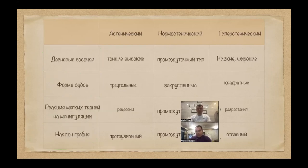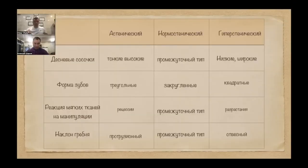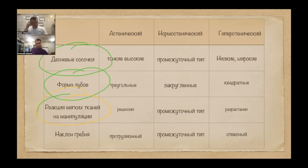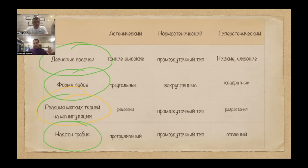The next component — gingival papillae. In asthenics these are thin and tall papillae; in hypersthenics they are low and wide. Tooth shape follows as a consequence. The gingival reaction I will mark yellow, because deeper understanding of recession or hyperplasia relates to individual moments. It has been proven — we found an interesting source — that if tooth intrusion occurs, recession may not form, and if it was present, it can fully close thanks to the soft tissue complex surrounding even a thin gingival biotype.